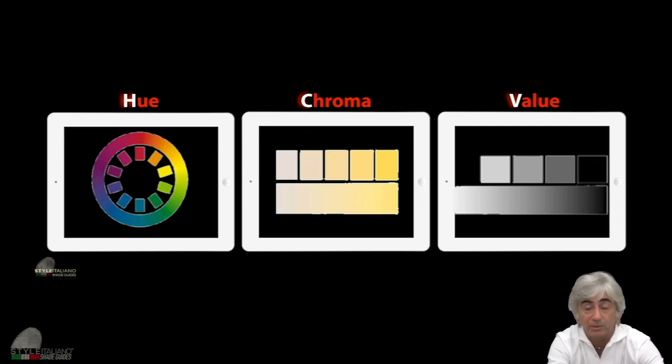And the last but not the least in order to the importance is the value. The human eye sensitivity is very high with the value. The value is the brightness, indicated in quantity of the gray that you have inside the restoration. The less you have, the higher is the value. The more you have, the darker is the value.